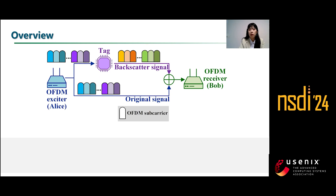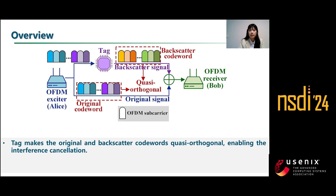Typically, an OFDM backscatter system modulates the entire OFDM symbol to embed each bit of tag data, reversing the phase to transmit one and keeping it unchanged to transmit zero. Similarly, O-Scatter uses ambient OFDM signals as its carrier and embeds one bit of data over an excitation data segment. The key difference is that besides embedding data over the phase, we vary the content of the segment to distinguish it from the overlapping original signal. We refer to these as the backscatter cohort and the original cohort, and their relation as quasi-orthogonal.